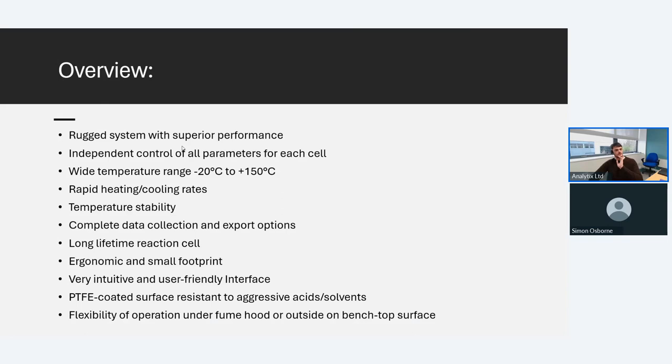I wanted to use this point to give an overview of the hardware and software. Excelsis is a really rugged system with superior performance. We have independent control in all cells for temperature and stirring. We can reach a wide range of temperature minus 20 to 150, and we have rapid heating and cooling rates and exceptional temperature stability. We have complete data collection methods and we're able to export these really easily. The reaction cell itself has a really long lifetime. It's ergonomic and has a small footprint within or outside of your fume cupboard. We have a really intuitive and user-friendly interface, with options of using within the fume cupboard stacked or separate or outside of the fume cupboard.